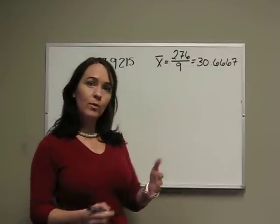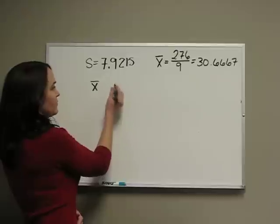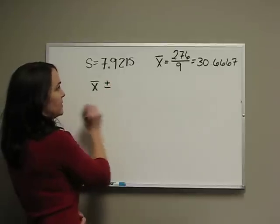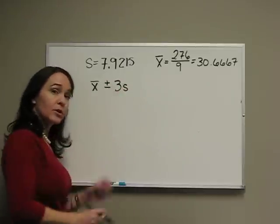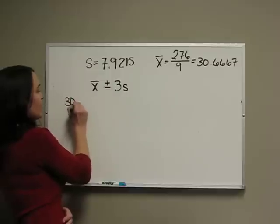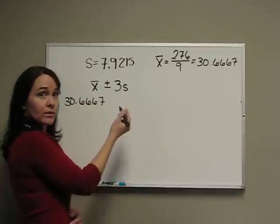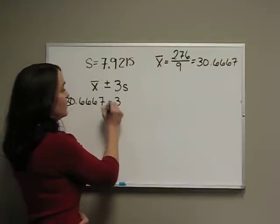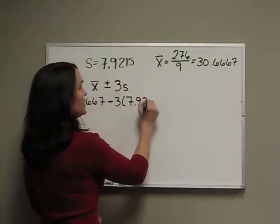What we're going to do is take our mean and add and subtract three of our standard deviations, so we're going to have two numbers. Our mean is 30.6667. Let's start with subtracting: minus three times our standard deviation, 7.9215.